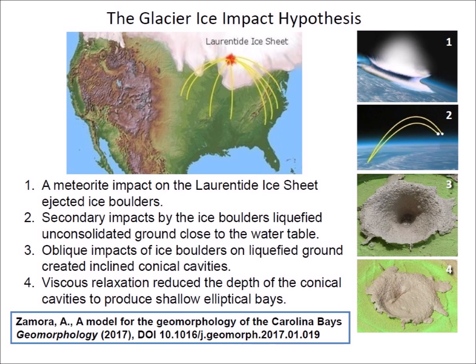The Glacier Ice Impact Hypothesis, published in 2017, proposed that the Carolina Bays were created by the secondary impacts of glacier ice chunks ejected by the meteorite impact on the Laurentide Ice Sheet. The impacts of the ejected ice chunks produced seismic vibrations that liquefied unconsolidated ground, and the ice projectiles created inclined conical cavities.